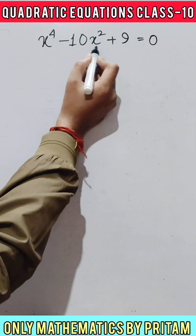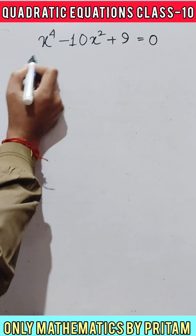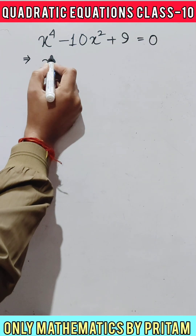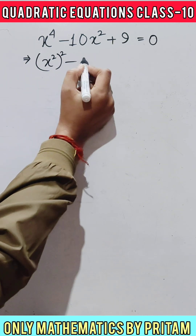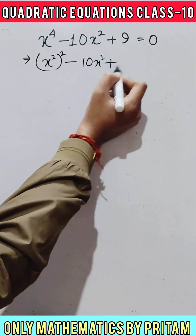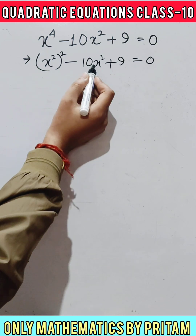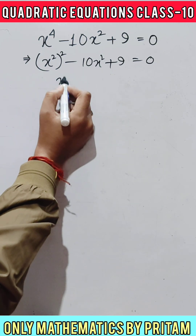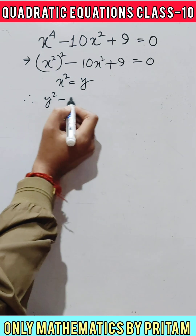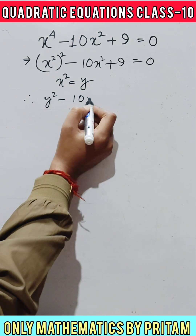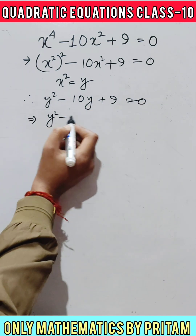We'll solve this equation. First of all, x to the power 4 can be written as the square of x squared, minus 10x squared as it is, plus 9 equal to 0. Now take x squared as y, so the equation will be y squared minus 10y plus 9 equal to 0.